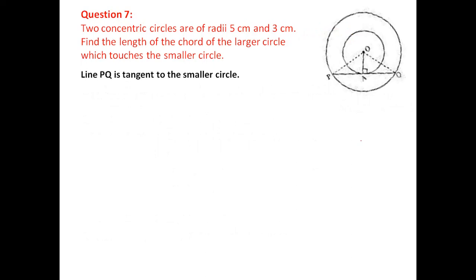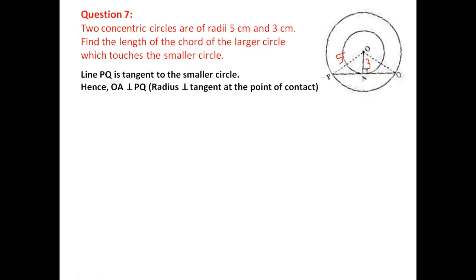Question 7: there are two concentric circles — circles with the same center. The outer circle has radius 5 centimeters and the inner circle has radius 3 centimeters. Find the length of the chord of the larger circle which is tangent to the inner circle. Let PQ be the chord and A the point of tangency with the smaller circle.